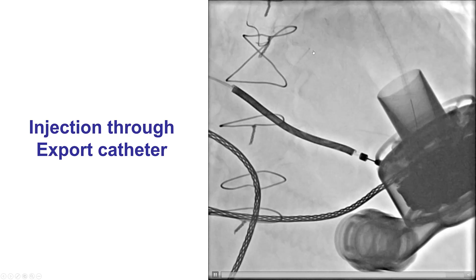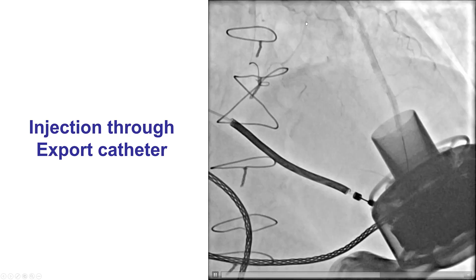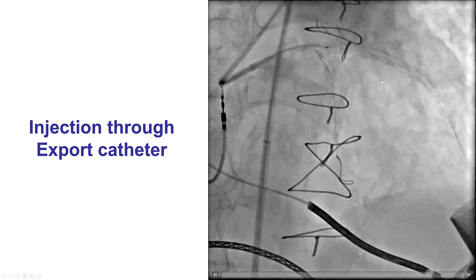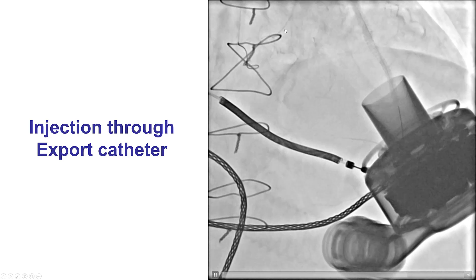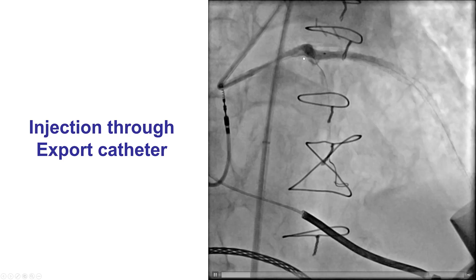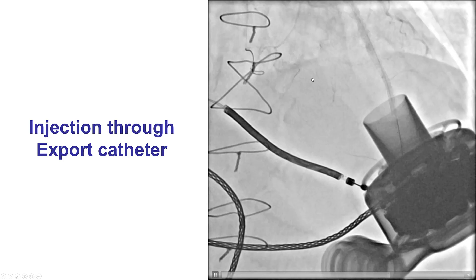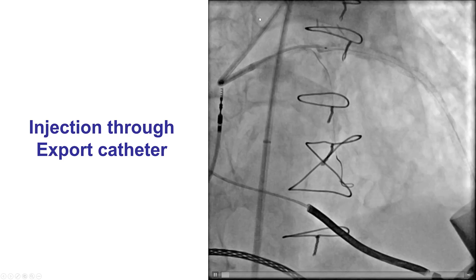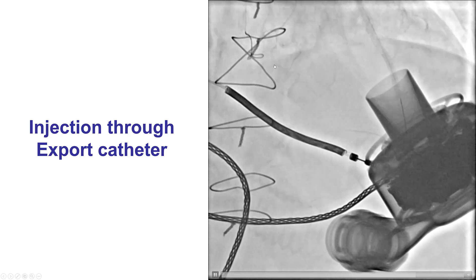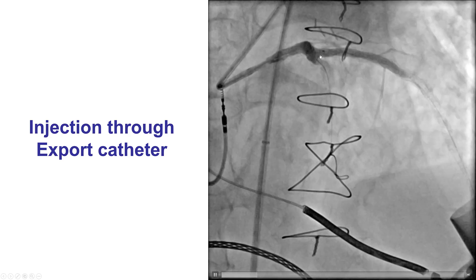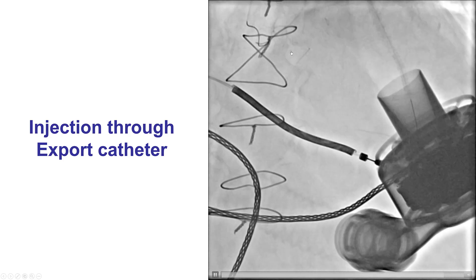We still have some contrast staining within the cusp, which is why we minimized our injections. The LAD looks wonderful, but now we have a new problem — we have lost flow into the circumflex. During attempts to deliver the stents, there was some movement of the wire into the circumflex, and it appears that wire movement likely caused dissection of the circumflex.